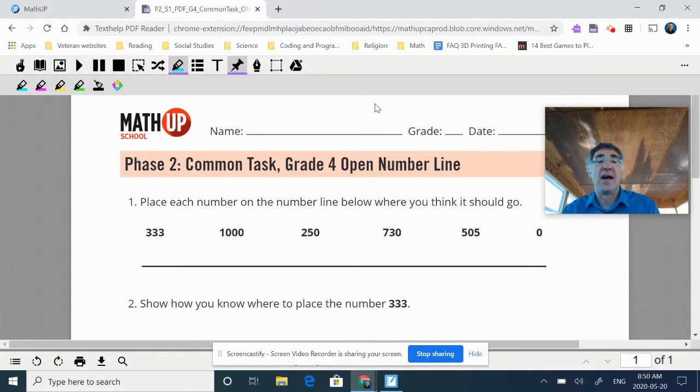So when we go to our common task for grade four, the open number line, it says place each number on the number line below where you think it should go. And so we have this line, but there's no labels, there's no numbers, it's completely open-ended. And so we have to figure out where would I put each of these six numbers on this number line.